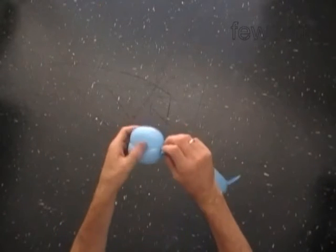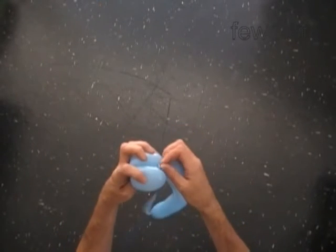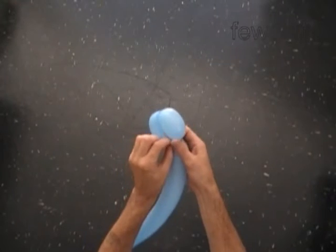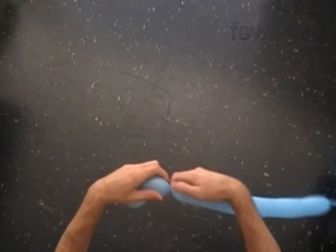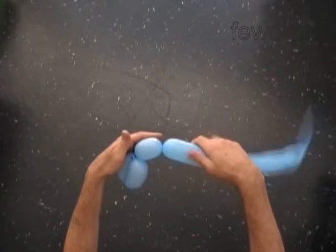Force the knot of the balloon between bubbles to secure the lock. With the third 2 inch bubble. It is the eye.